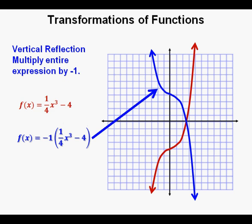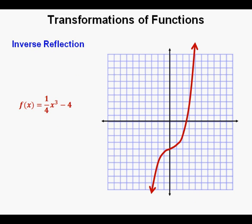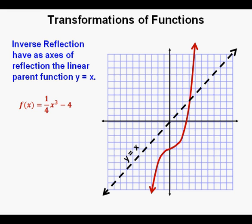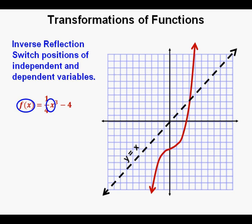Here is the vertically reflected graph of the function in blue. Now we'll look at an inverse reflection. An inverse reflection is a reflection of a function that is an inverse of another function. Inverse functions have as their axis of reflection the line y equals x — the identity function or linear parent function — shown here as the diagonal dashed line. To obtain an inverse function that reflects about the line y equals x, we need to switch the positions of the independent and dependent variables.